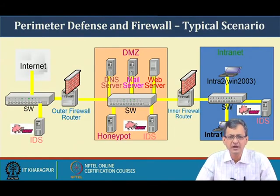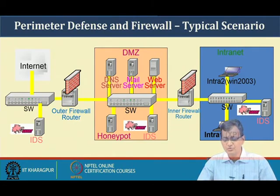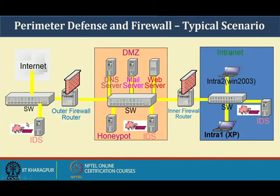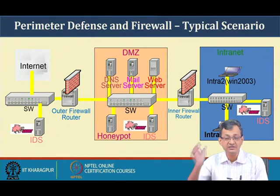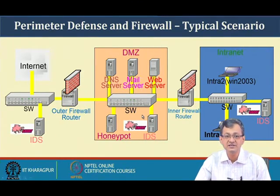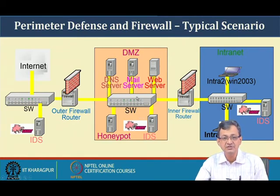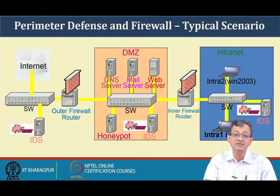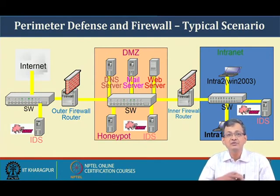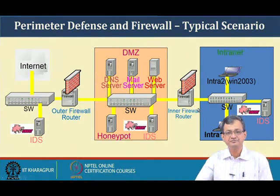A typical modern network security scenario has internet connectivity with an IDS (intrusion detection system) on one side, and the internal network on the other, with two firewalls — outer and inner. Between them is the DMZ zone with DNS server, mail server, and web server. There is also an intrusion detection component and a honeypot — where attacks are expected and signatures are learned — all within the DMZ zone, before the inner firewall connects to the internal network.